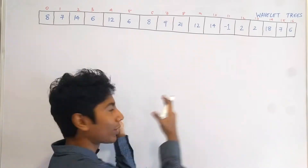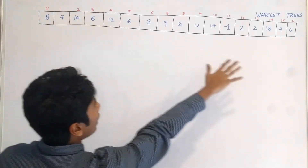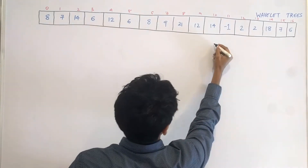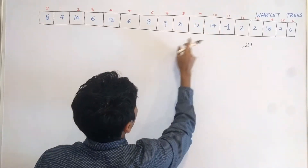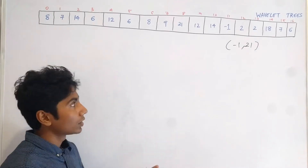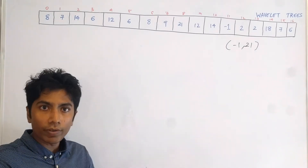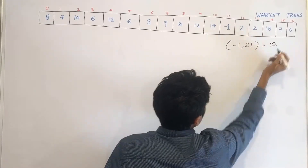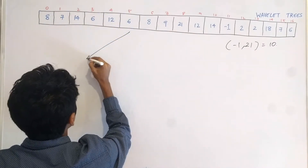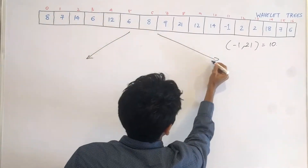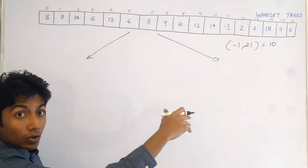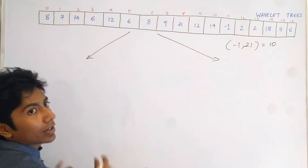In this array the largest value we have is 21 and the smallest value we have is minus 1. Now if you take the middle of these two elements — basically taking the middle of the range — you end up with 10. So that's going to be our pivot and we are going to break this array into two unstable partitions. All elements less than or equal to 10 are going to fall on the left side, and all elements greater than 10 are going to fall on the right side.